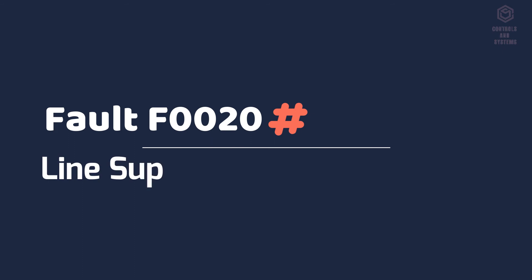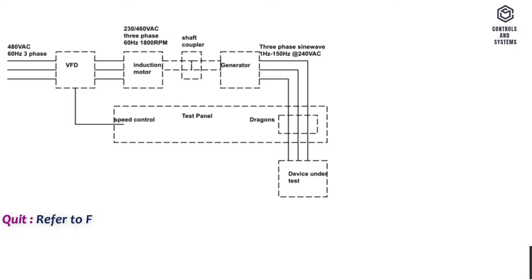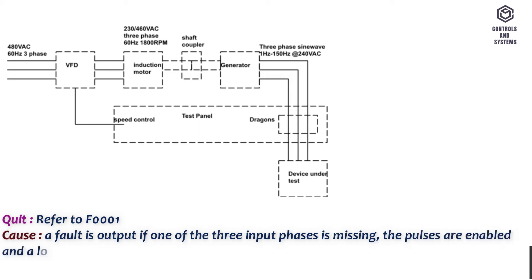Fault F0020 line supply phase missing. Quit: Refer to F0001. Cause: A fault is output if one of the three input phases is missing, the pulses are enabled and a load is present. Diagnosis and remedy: are the power connections.